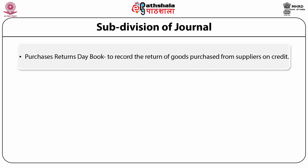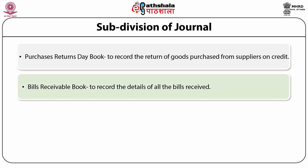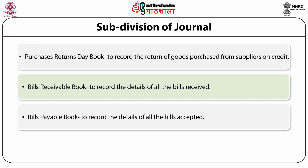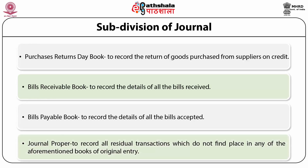The subdivisions include: a book to record the return of goods purchased from suppliers on credit; Bills Receivable Book, to record the details of all the bills received; Bills Payable Book, to record the details of all the bills accepted; and a journal to record all residual transactions which do not find place in any of the aforementioned books of original entry.